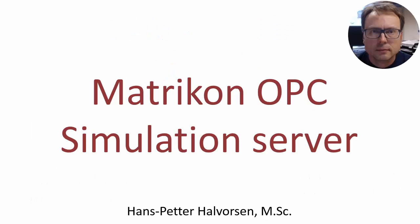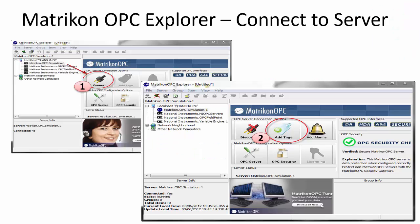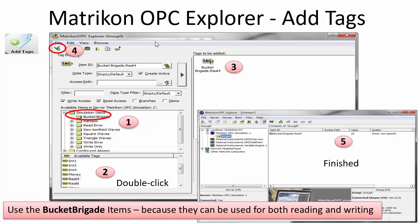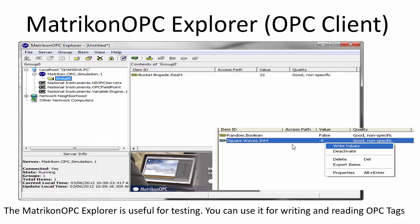First, a short introduction to the Matrikon OPC simulation server. The Matrikon simulation server consists of an OPC Explorer where you can browse the tags and see the values. So here we browse the tags and see them in the list. We can also write values from this explorer, like this.